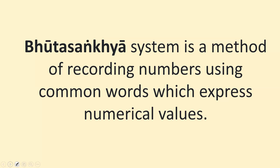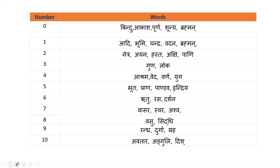That is what we are talking about as subject integration. Let me take a few examples. I have written in Devanagari, and I will also explain in English. For number 0, the words representing zero include: Bindu — a dot, Akasha, Poorna, Shunya, Brahman, and so on. Whenever we talk about these concepts, they represent the number 0.